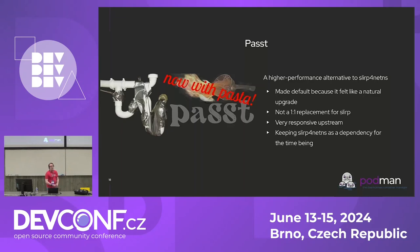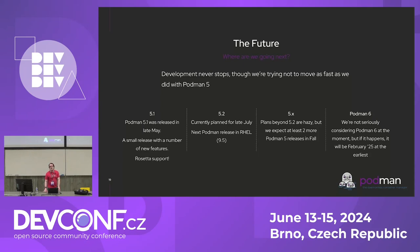I mentioned earlier that we changed our default network stack from Slirp4netns to Pasta. Pasta is a really lovely tool — a lot higher performance with an excellent upstream community. But it turns out it's not quite as one-to-one of a drop-in as we hoped. There were a lot of issues in the early days where rootless networking wasn't doing what we expected, and we ended up answering a lot of bug reports. We're still committed to Pasta and think it's the way forward, especially because of how active the upstream is. In the meantime, we're keeping Slirp4netns as a package dependency — if it broke you, just use `--network=slirp4netns` and your container continues to work.